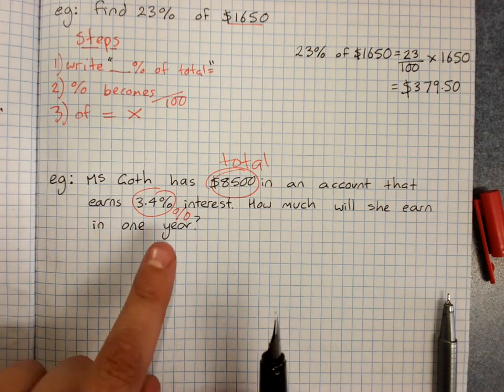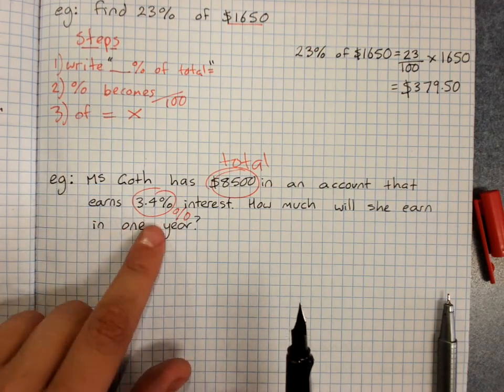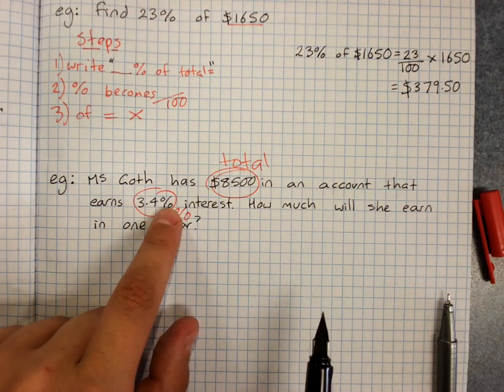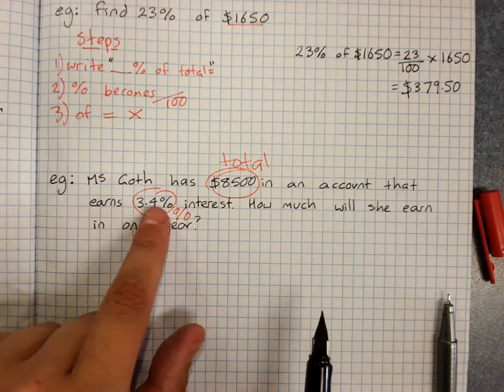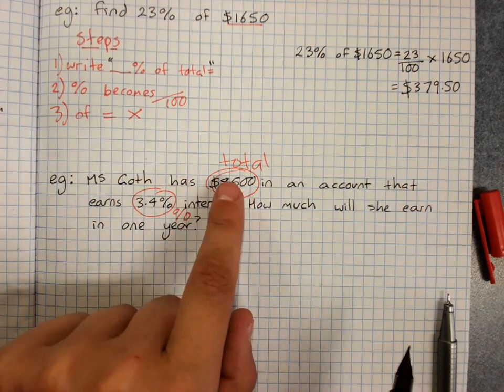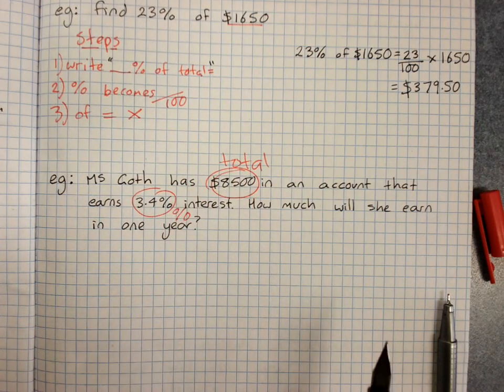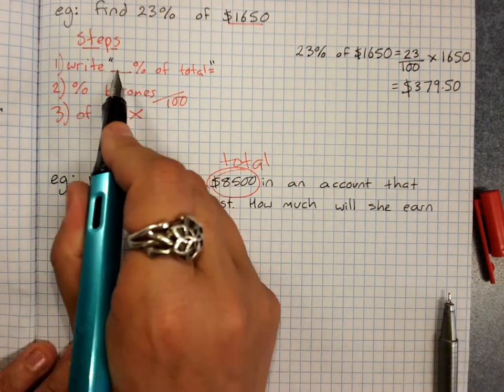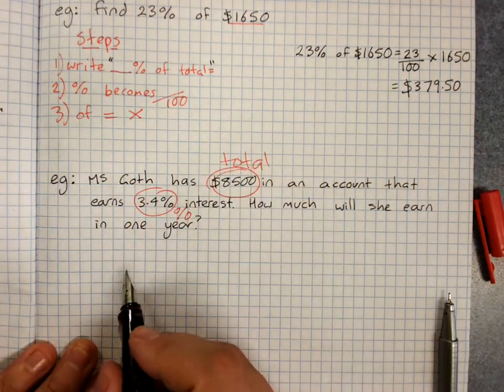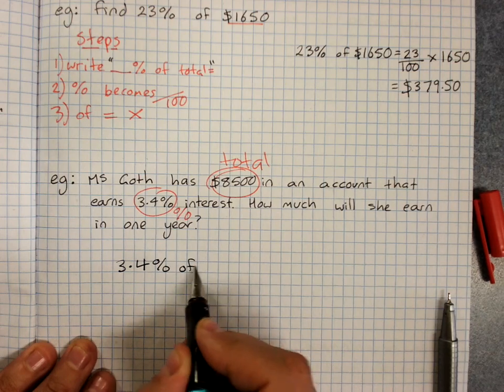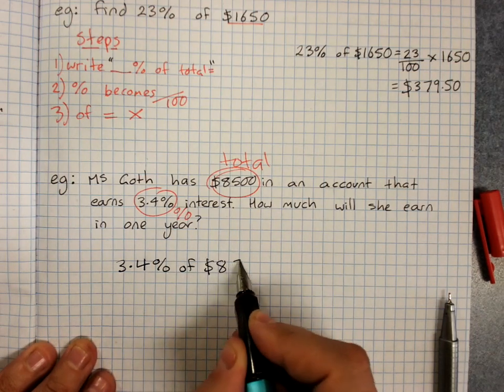So the clues that tell us that I'm finding a percentage of a total is that there's a percent sign in the question so they've told me a percentage that they want and they've told me a total amount. So this tells me this is a percentage of a total. You write find the percentage of the total. 3.4% of $8500.